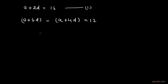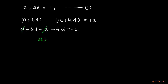We can easily solve this equation: A plus 6D minus A minus 4D equals 12. We cancel out the positive A with the negative A, and subtract 4D from 6D, to get 2D equals 12. This means D equals 6.